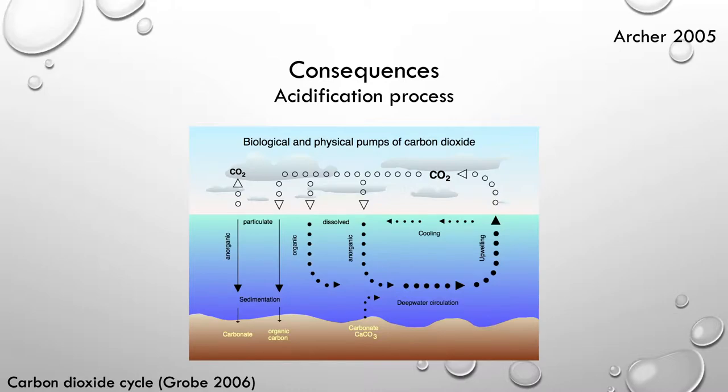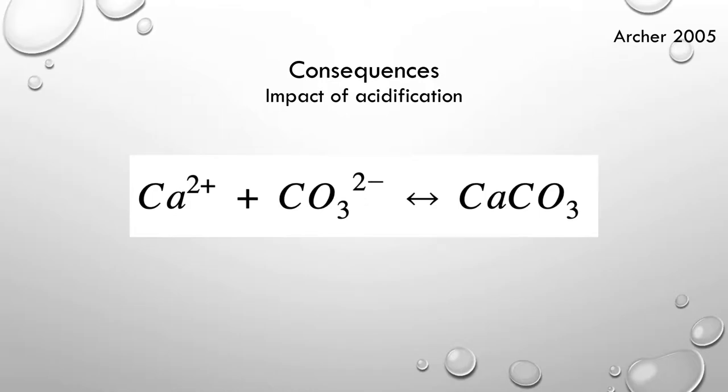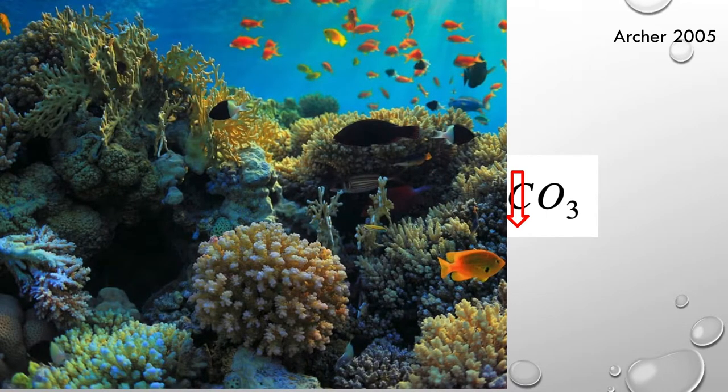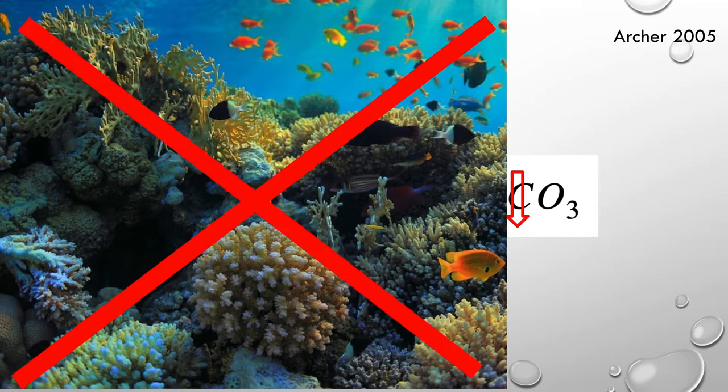Coral reefs build their skeletons with calcium carbonate, according to the following reaction: Calcium and carbonate form calcium carbonate. A steep drop in carbonate will result in this equilibrium shifting to the left, which reduces the amount of calcium carbonate. In other words, coral and shells partly dissolve.